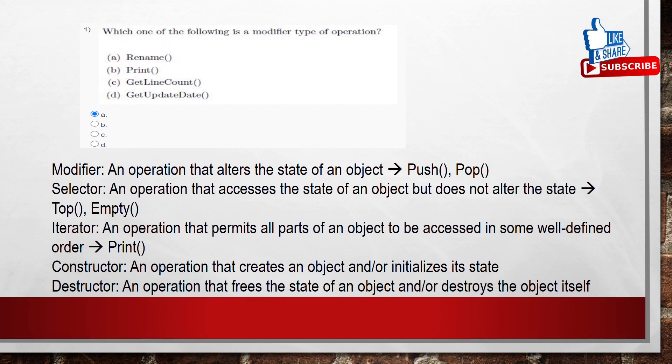Coming to the modifier operation — it needs to alter the state of the object. Print is an iterator. Get line count and get update date just tell the state or condition, so they are selector operations. But rename changes the state of the object, so it is a modifier. The answer is rename.